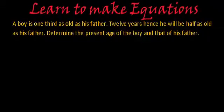Let's read the statement and then we will try and solve it. The statement says: a boy is one-third as old as his father. 12 years hence, he will be half as old as his father. Determine the present age of the boy and that of his father. This is an age problem.